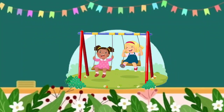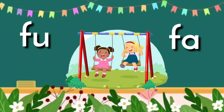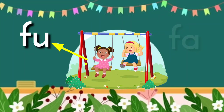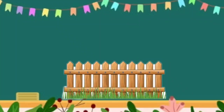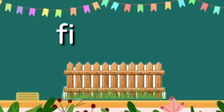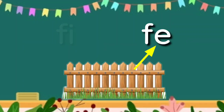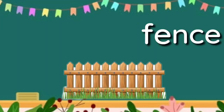Next picture, please. Oh! The girls are having fun. What's the initial blend of the word fun? Is it fa or fu? Correct! It's fu for fun. Next picture is a fence — this is also called the barrier. What's the initial blend of the word fence? Is it fi or fe? Very good! It's fe for fence.